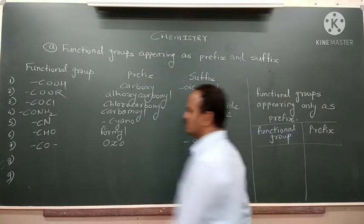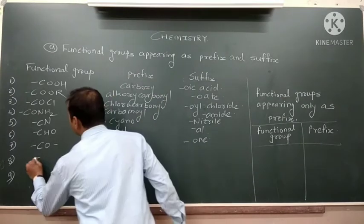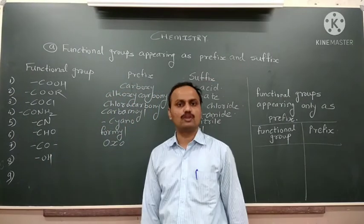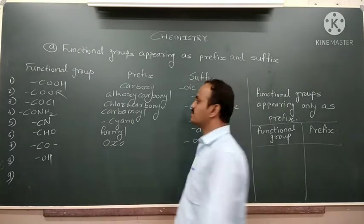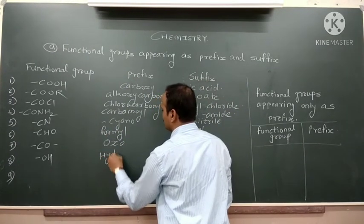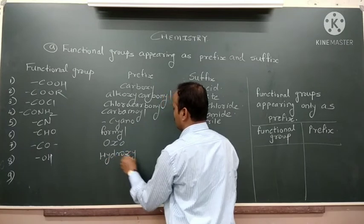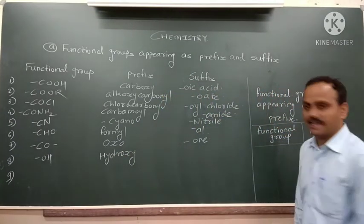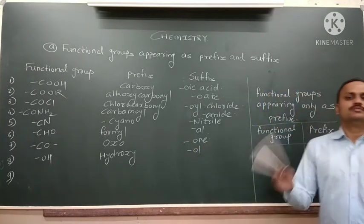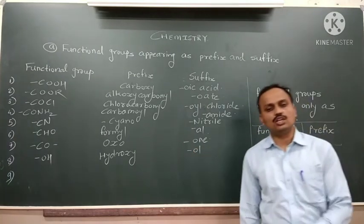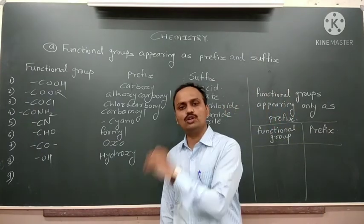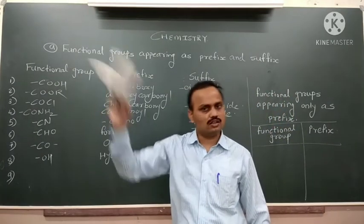The next functional group is the alcohol functional group, with which we are familiar. When the alcohol functional group comes as a substituent, it is called 'hydroxy'. When it comes as a parent, it is called '-ol'. Examples include methanol, ethanol, propanol, butan-1-ol, butan-2-ol, pentanol, etc.